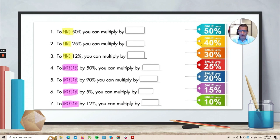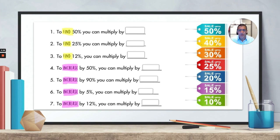And so if you see the questions, it says to find 50%, you can multiply by. So why don't you go ahead and pause the video and try these questions now. Okay, so I hope you didn't find these questions too challenging. Let's do them together.